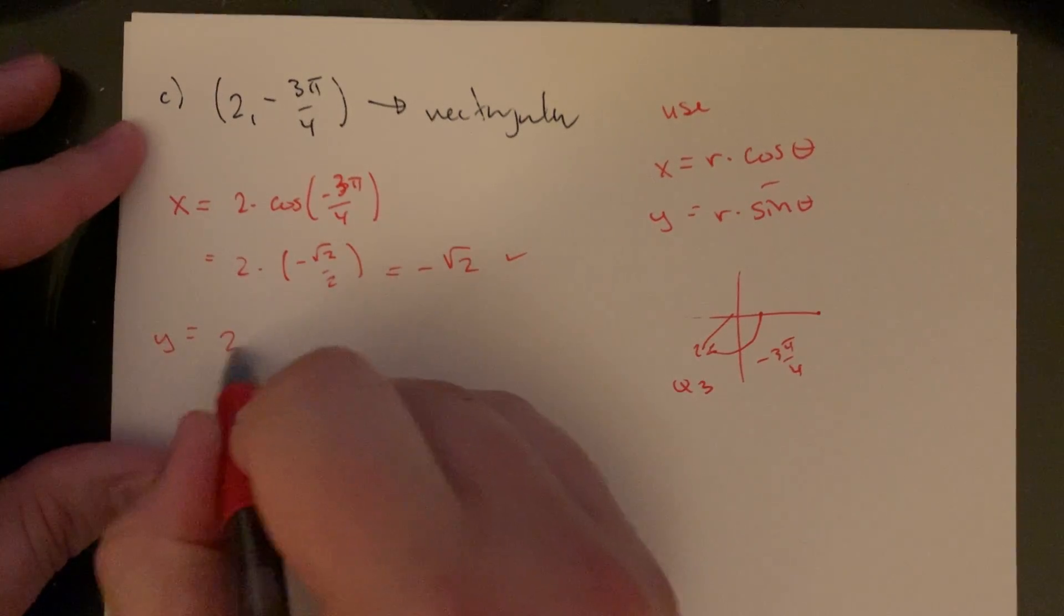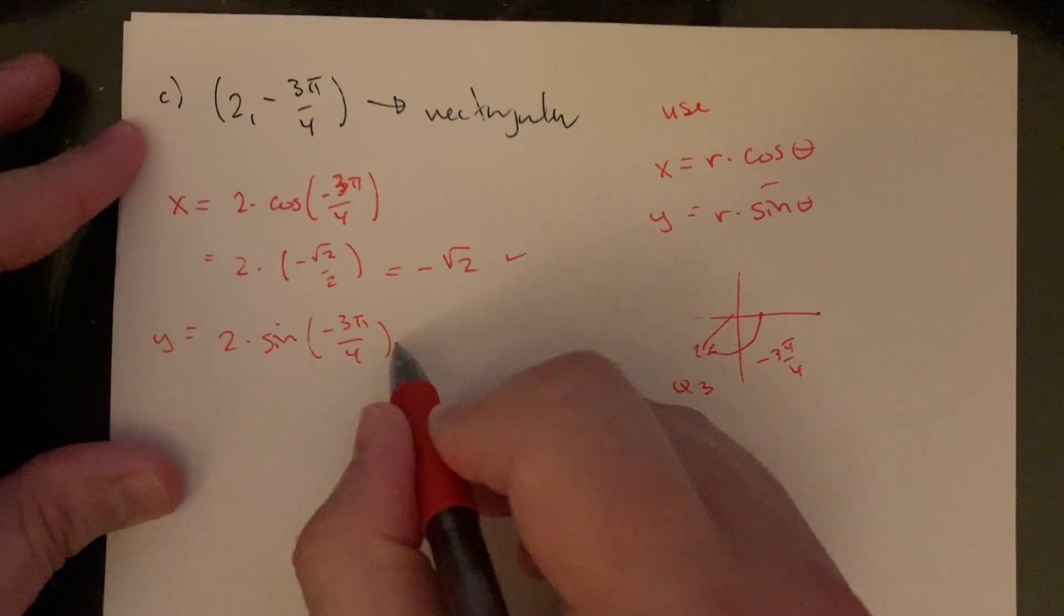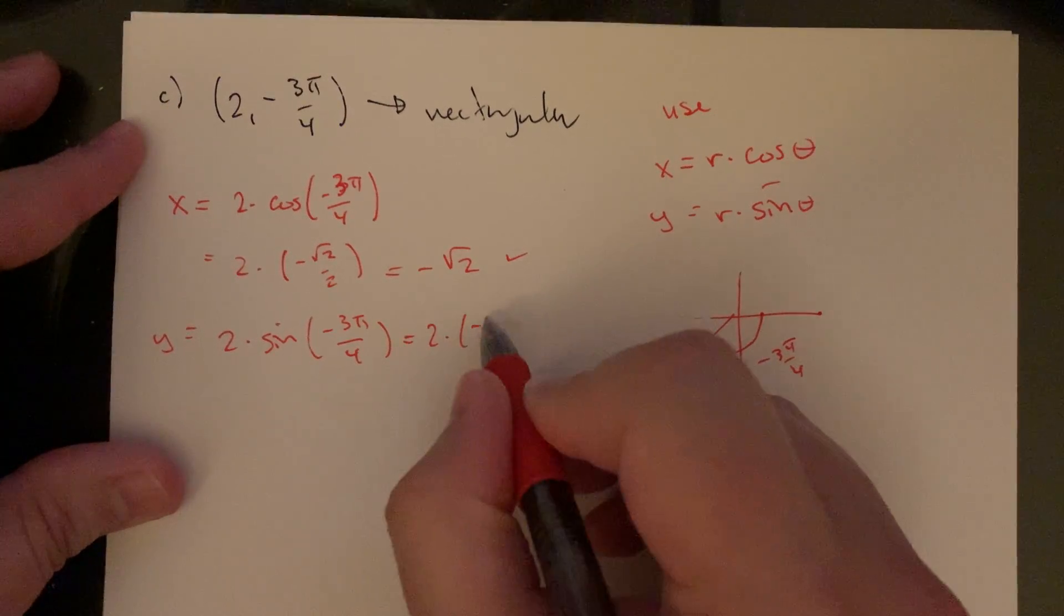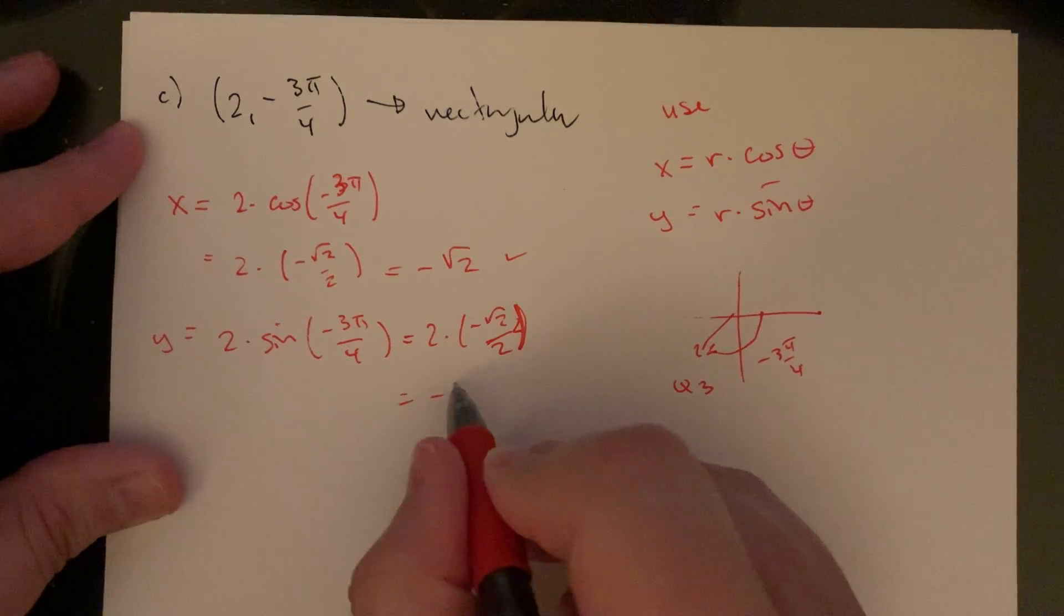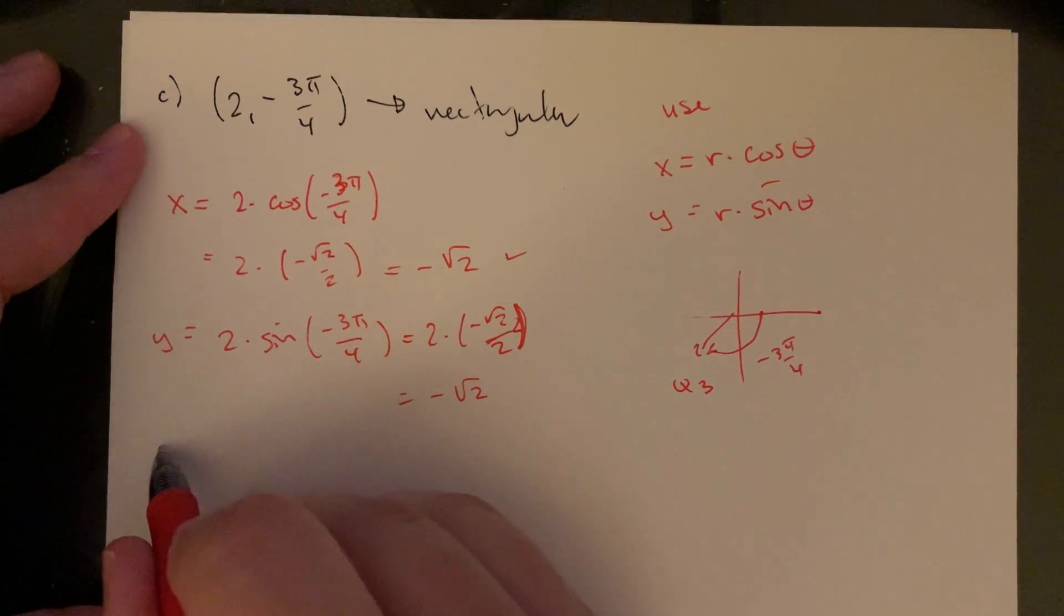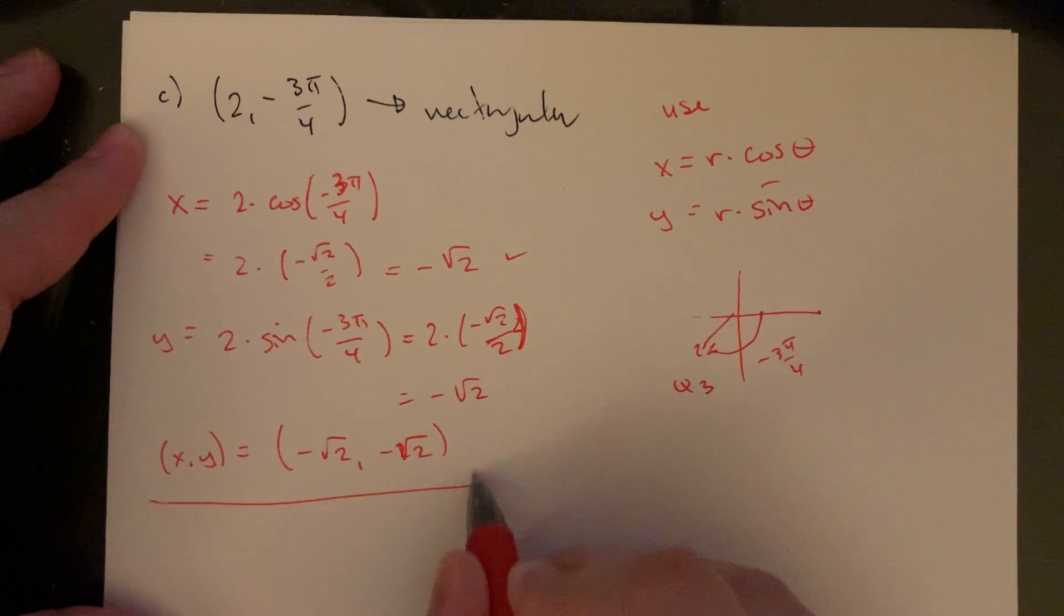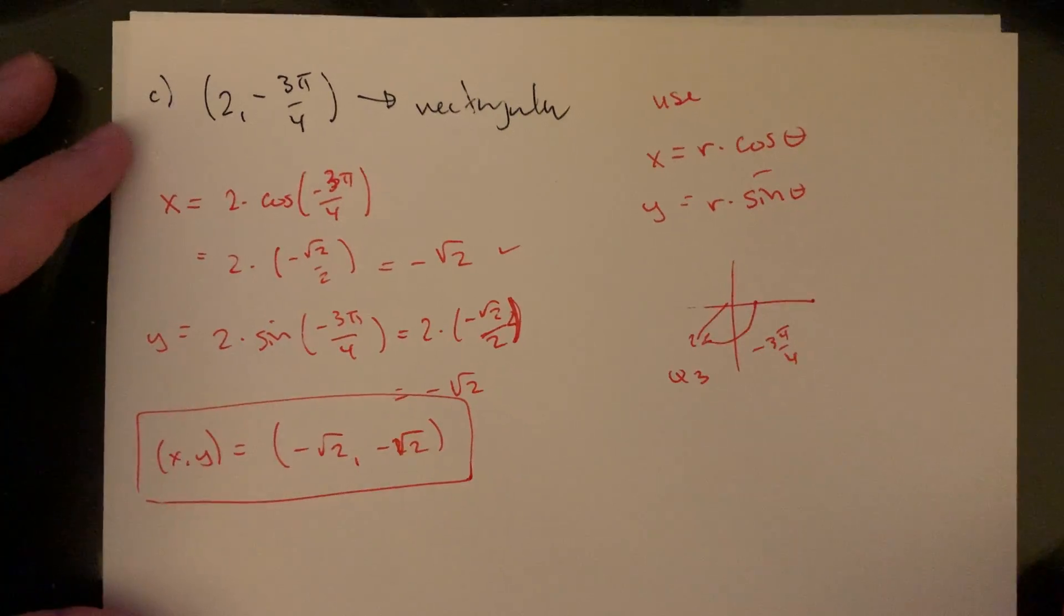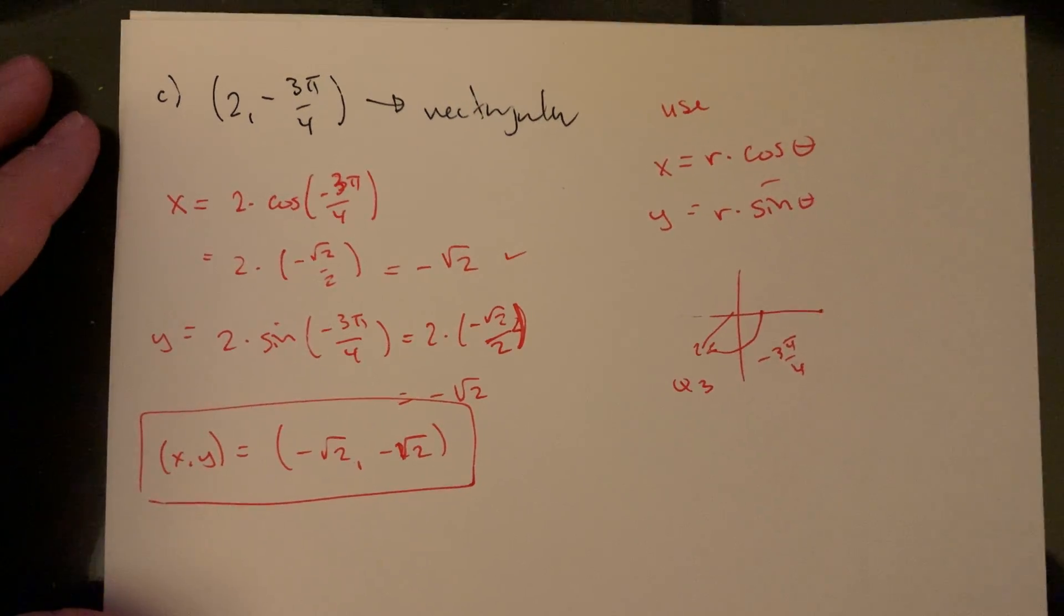The y value we said is going to be 2 times the sine at negative 3 pi over 4. I just said that's also going to be negative root 2 over 2. So that's also going to be negative root 2. So my rectangular coordinate here, as an x, y coordinate, it's going to be negative root 2 and negative root 2. So that's point C. I wonder if I should have labeled these as points like A, B, C, D. That probably would have been a better idea.